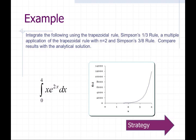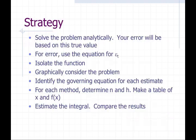What I want to do to start off Richardson's extrapolation is to take a look at some examples we've already worked with. We were asked earlier to integrate the following using the trapezoidal rule, Simpson's one-third rule, and a multiple application of the trapezoidal rule with N equal to 2, and the Simpson's three-eighths rule, and to compare the results with the analytical solution. So here I'm integrating between 0 and 4 the function x equal to e^(2x). The strategy is always to solve the problem analytically to get a baseline, and your error will be based on this true value using the equation epsilon_t.